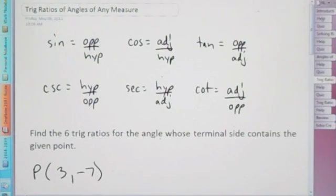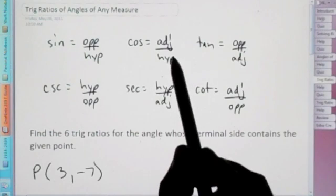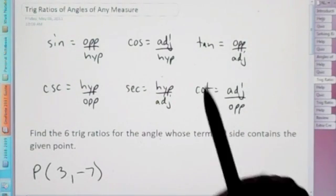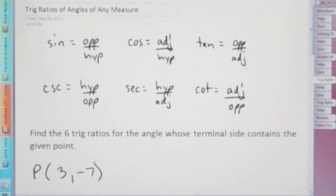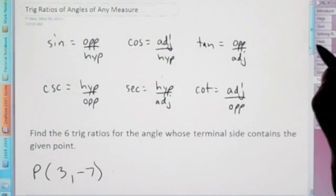So sine is going to be opposite over hypotenuse, cosine adjacent over hypotenuse, tangent and so on and so forth, but we've done this already. So here, this is just a reminder.